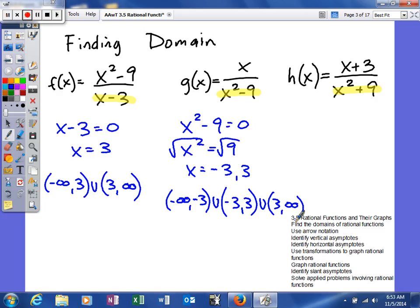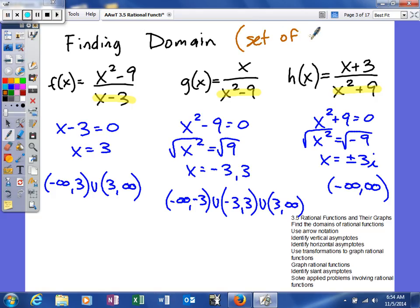And then lastly on this one, you'll set your denominator equal to zero and solve. So in this one, since the two numbers that we found that we'd plug in for x to make our denominator equal to zero are imaginary, that's not going to affect the domain because the domain is basically the set of real numbers. So anytime that we get imaginary values, that's not going to limit our domain.